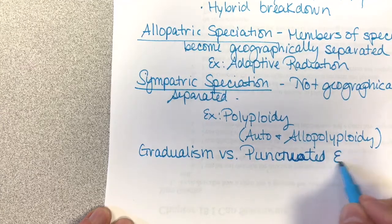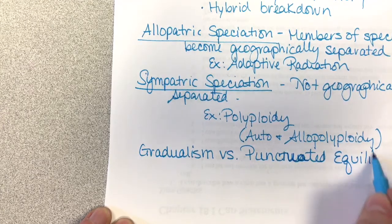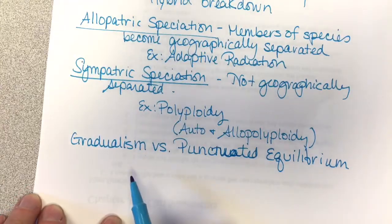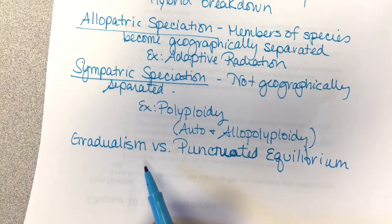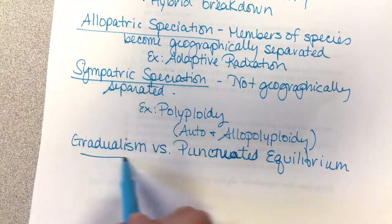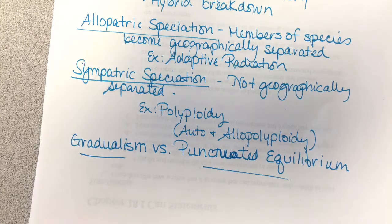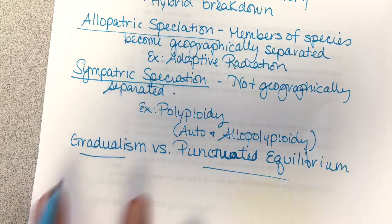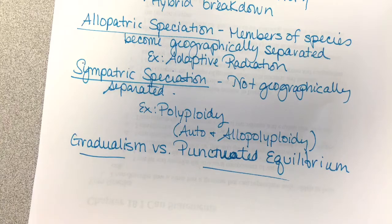Punctuated equilibrium — that's the timing and how evolution occurred. Review those as well, look in your notes. That's just a basic overview of Chapter 24, the main concepts. I'm not going over every little specific thing, just giving you the general overview.